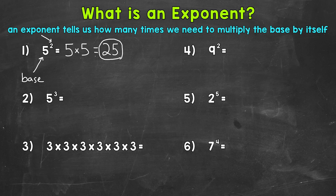Another important aspect of exponents I want to cover is how to say them. For number 1, we can say 5 to the power of 2. An exponent of 2 actually has a special name — we can say 5 squared. Any number to the power of 2, we can say squared.